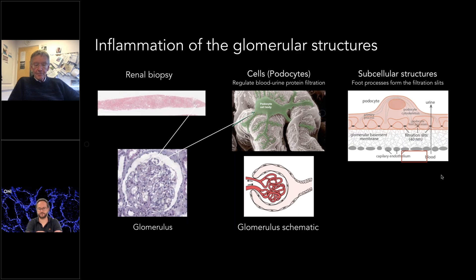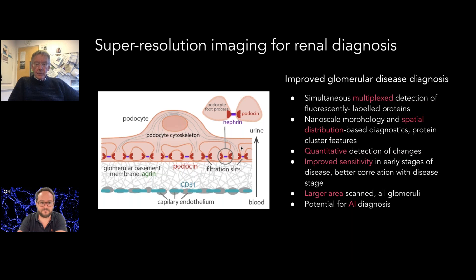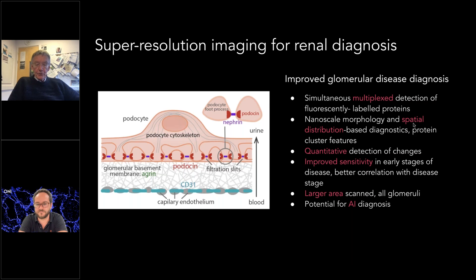We are interested in several proteins in the glomerulus. CD31 picks up the endothelium; laminin and collagen pick up the basement membrane. Within that, we can sometimes see immunoglobulins embedded when involved in disease. Very importantly, we look at nephrin, which controls filtration, and proteins that sit either side of it, such as podocin. We hope to achieve improved glomerular disease diagnosis through simultaneous multiplex detection of multiple proteins, nanoscale morphology, spatial distribution, and quantitative analysis, improving sensitivity for earlier diagnosis.